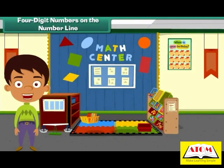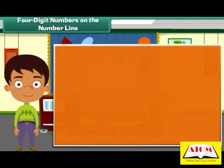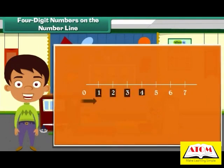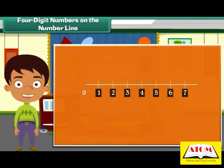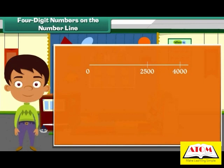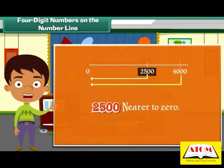Four-digit numbers on the number line. A number line is a line used to represent numbers, with equal spaced divisions. The smaller numbers are placed nearer to zero than larger numbers. Compare the positions of 4,000 and 2,500 on the number line. Which number will be nearer zero? Which of the two is bigger? 2,500 will be nearer zero, and 4,000 is bigger.